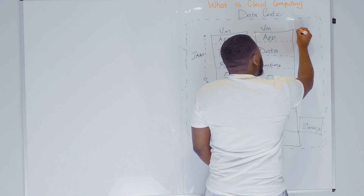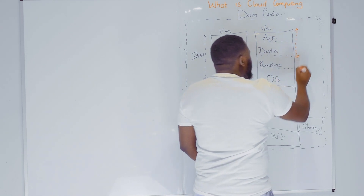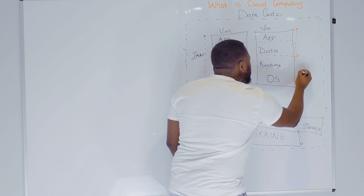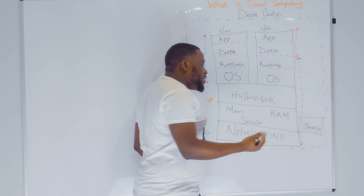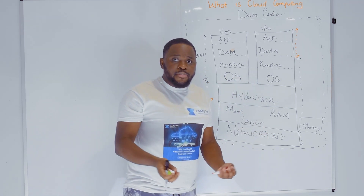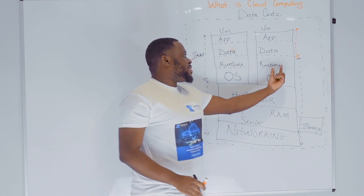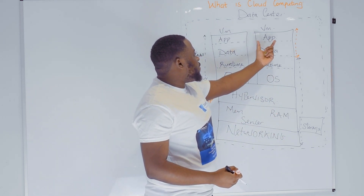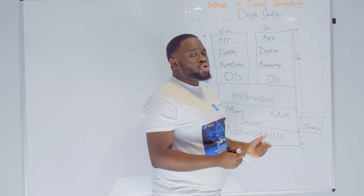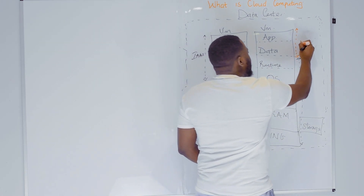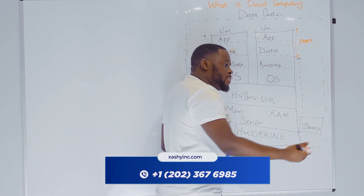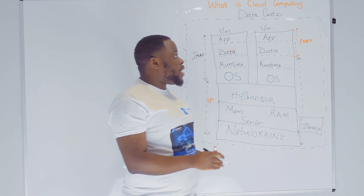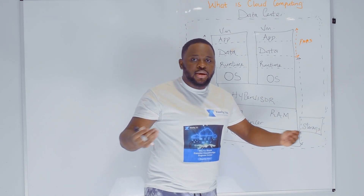Now let's talk about platform as a service. With platform as a service, the cloud provider manages from the network all the way to the runtime. That means the cloud provider is going to host the VM and manage the application dependency, which is the runtime. You as the customer simply provide your application and manage your application data. The cloud provider is providing you a platform on which you can host your application data and manage your application. The cloud provider handles scalability and everything.